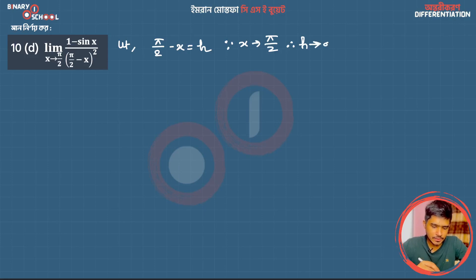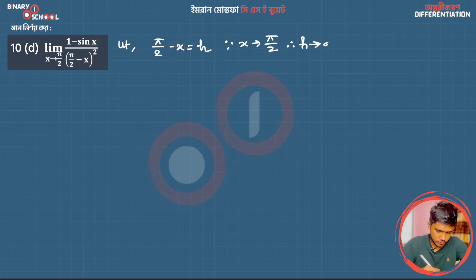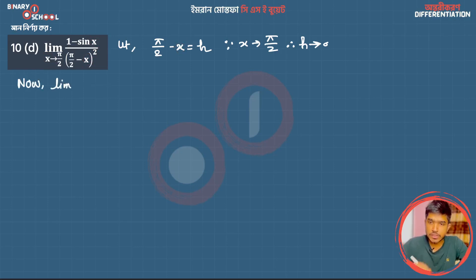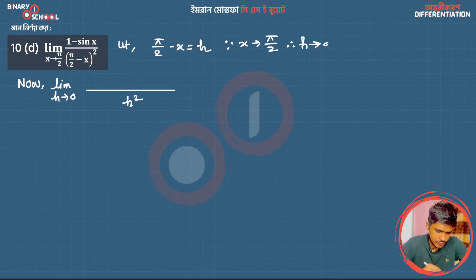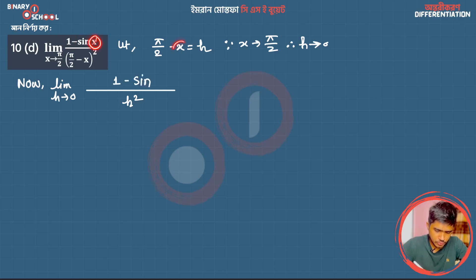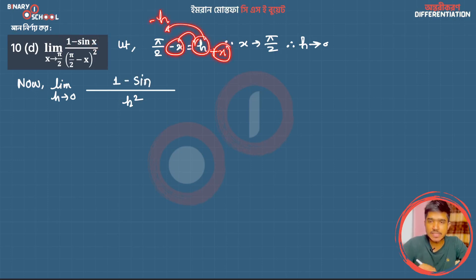We replace x with h in the expression. So I'm going to connect the limit now. We need to change for h tends to 0. The expression becomes: 1 - sin(x), where x is now replaced by π/2 - h. So it becomes 1 - sin(π/2 - h), which equals 1 - cos(H). In the denominator we get (π/2 - x)² = h².